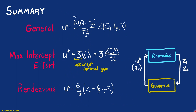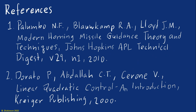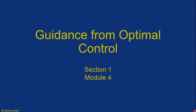In summary, here are the main results of this section: the general optimal guidance law with a time-varying navigation gain; the max intercept effort form of the optimal guidance law, shown to be true proportional navigation with an apparent optimal gain of three; and rendezvous guidance where both intercept effort and velocity matching effort are taken to infinity. These results can all be viewed as closed-loop feedback guidance where measurements of the kinematics are fed into the guidance law, which provides a desired pursuer acceleration. This concludes the section.